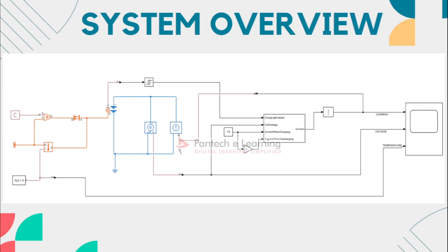First of all, it is called the battery constant current and constant voltage block. This block mainly represents a battery being charged or discharged using the constant current and constant voltage algorithm. It takes input parameters such as the charge enable, cell voltage, and current available for charging and discharging. It provides output parameters such as the state of charge and battery current.